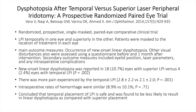This contrasts with a study by Vera and colleagues — a randomized, prospective, single-masked, paired-eye comparative clinical trial. Right and left eyes were randomized to superior versus temporal LPI, with patients masked to which eye received which treatment. Main outcome: new onset linear dysphotopsias. They found linear dysphotopsias in 10.7% of eyes with superior LPI versus 2.4% with temporal LPI (p=0.002). There was more pain with temporal LPIs. Hemorrhage rates were similar, and they concluded temporal LPI is safe and less likely to cause linear dysphotopsias.